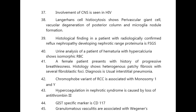A female patient presents with history of progressive breathlessness; histology shows heterogeneous patchy fibrosis with several fibroblastic foci. Diagnosis is usual interstitial pneumonia. Chromophobe variant of RCC is associated with monosomy 1 and Y.